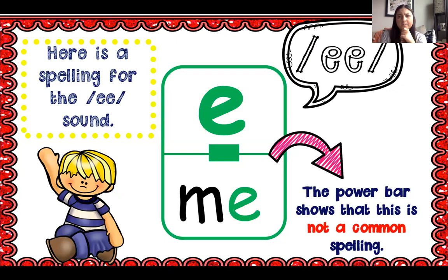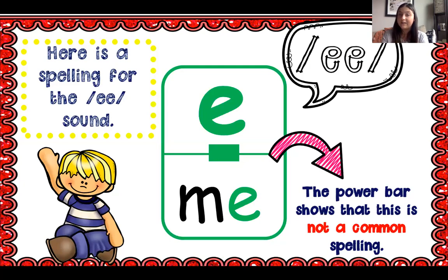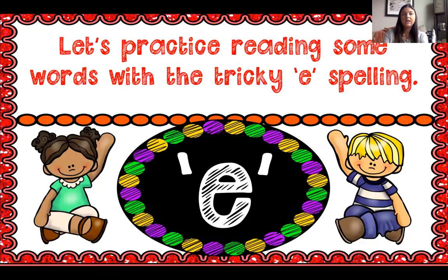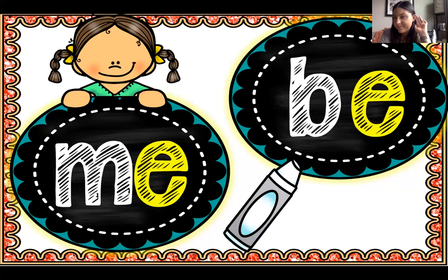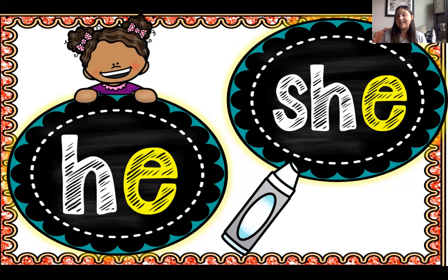Let's look at my power bar — am I going to see this a lot or not so much? Not so much. The power bar is small; it's not a very common spelling for the long E sound. Let's practice reading some words with the tricky E spelling — I'm going to say one and you repeat after me: me, be, he, she.